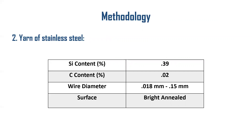The second part is the yarn of stainless steel, which is made from stainless steel that has good electrical conductivity and resistance to electromagnetic interference. By cutting thread from stainless steel and blending it with cotton, the yarn is formed. The recipe shows: silicon content 0.39%, carbon content 0.02%, wire diameter 0.018mm to 0.15mm, and the surface was bright annealed.